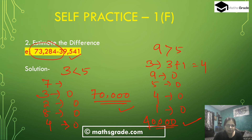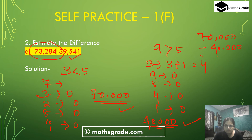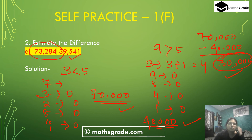Now subtracting: 73,284 rounded to the nearest ten thousand is 70,000, minus 39,541 rounded to the nearest ten thousand which is 40,000. 70,000 minus 40,000 is 30,000. So 30,000 is the answer. Estimating the difference of 73,284 minus 39,541 is 30,000.